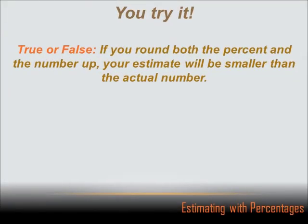True or false, if you round both the percent and the number up, your estimate will be smaller than the actual number. False. That's not true. If you round the percent down and make it a smaller number, and you round the number down, making it a smaller number, if I multiply two numbers that are smaller times each other, then the answer's going to be smaller. For instance, if I multiplied one times one, I get two. If I multiply two times two, I get four. If I take these numbers and make them bigger, then my answer's going to be bigger. If I take these numbers and make them smaller, then my answer's going to be smaller.